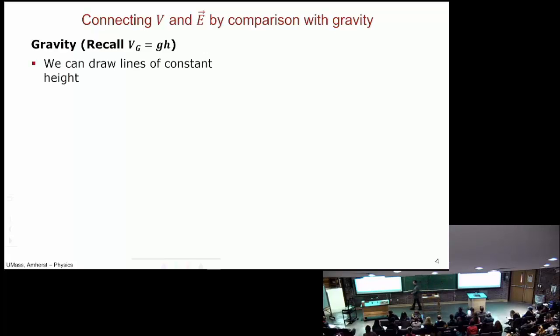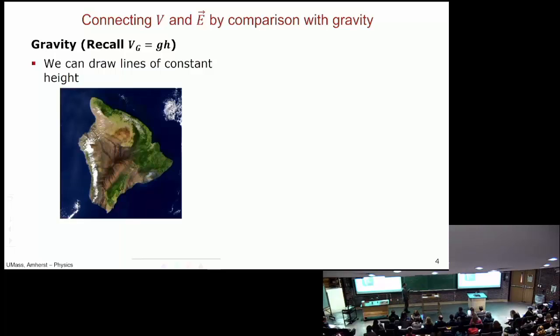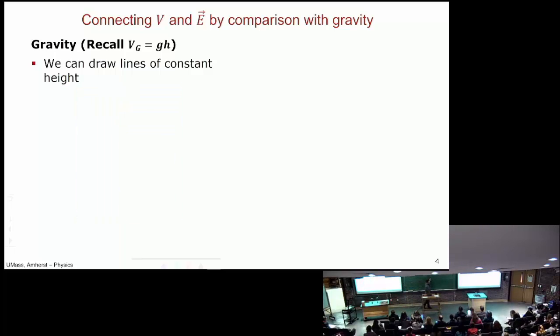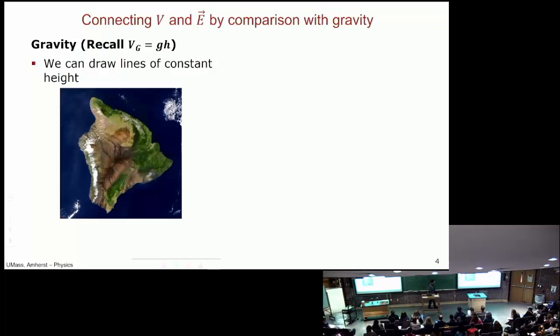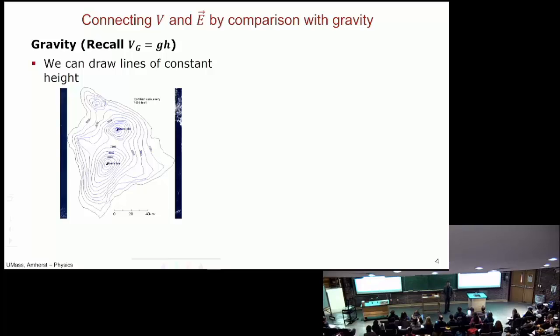So we can think of gravitational potential as lines of constant height—you're sitting in them. We can draw gravitational equipotentials; you're sitting in them. Or if we wanted to make it like a picture, here is a map of the island of Hawaii, and we can draw the lines of constant height. It's a topological map that shows you how high above the ground each point is.